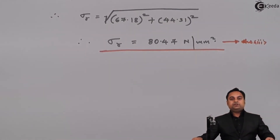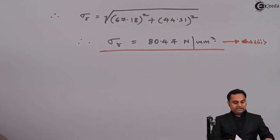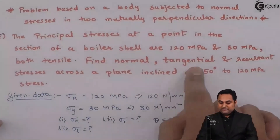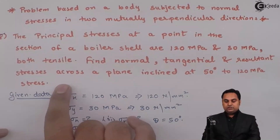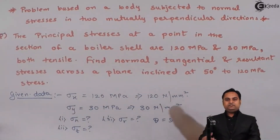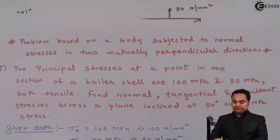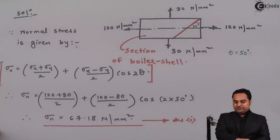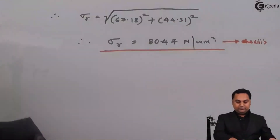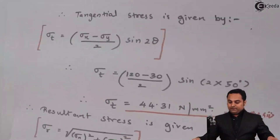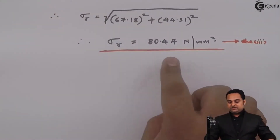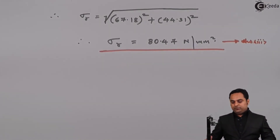In this question we were asked to calculate the values of normal, tangential, and resultant stresses across the inclined oblique plane. We found all the values: normal stress = 67.18 N/mm², tangential stress = 44.31 N/mm², and resultant stress = 80.47 N/mm². With this we complete the problem.